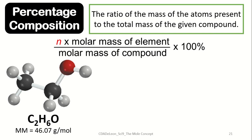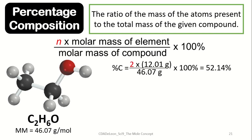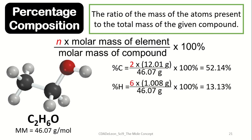Let us have C2H6O as an example, which has a molecular mass of 46.07 grams per mole. Let us look at the percentage composition of each element. Beginning with carbon, which has two atoms: 2 times 12.01 divided by 46.07 multiplied by 100, which is equivalent to 52.14%. Next, hydrogen has six atoms: 6 times 1.008 divided by 46.07 multiplied by 100, which is equivalent to 13.13%.